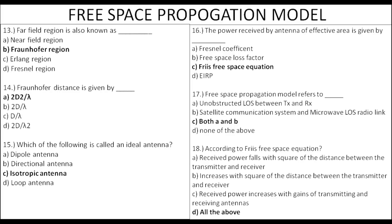According to the Friis free space equation: received power falls with the square of the distance, and increases with the square of the antenna gains. Received power also increases with the gain of the transmitter. So, all of the above is the answer.